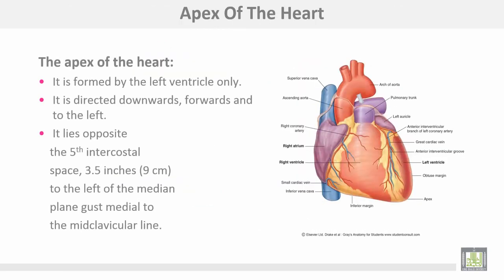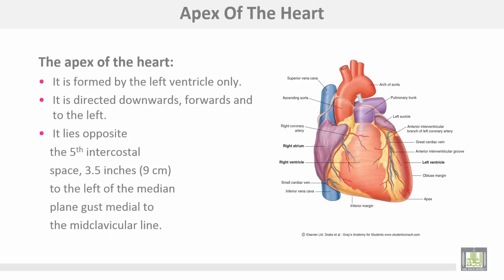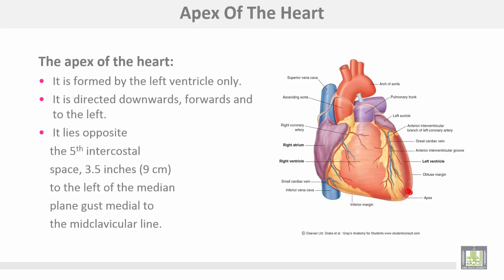The apex of the heart is formed by the left ventricle only and is directed downwards, forwards, and to the left. It lies opposite the fifth intercostal space on the left side, three and a half inches or nine centimeters to the left of the median plane, just medial to the mid-clavicular line. The apex is completely formed from the left ventricle.